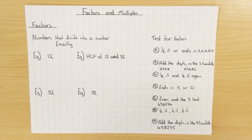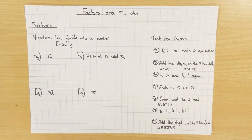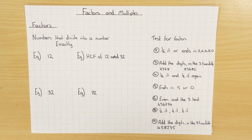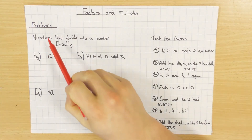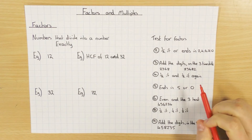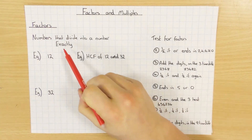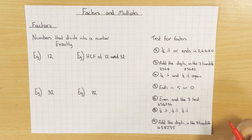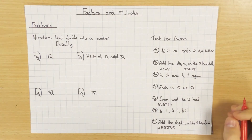Hi guys, in this video we're going to have a look at factors and multiples. So first of all we're going to look at factors. So what is a factor? Well a factor is when you have numbers that divide into another number exactly, so there's no remainder.